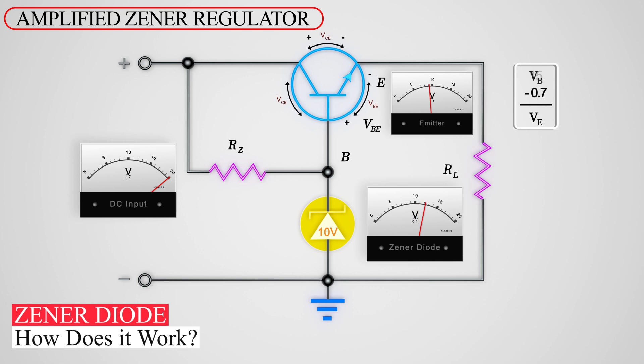With a Zener diode value of 15 volts, you'll have a 14.3 voltage at the emitter and the RL resistor.